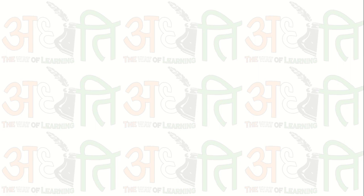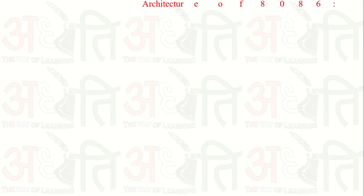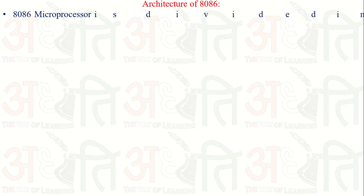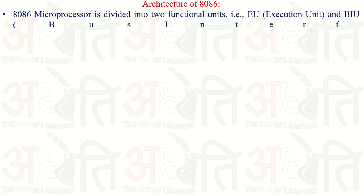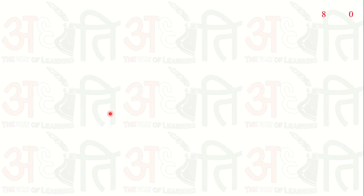Welcome back to this YouTube channel. Today we are going to discuss the 8086 microprocessor architecture registers. As we have seen in our previous video, the architecture of the 8086 microprocessor is divided into two parts: the first is the Execution Unit and the second one is the Bus Interface Unit, as you can easily see in this picture.